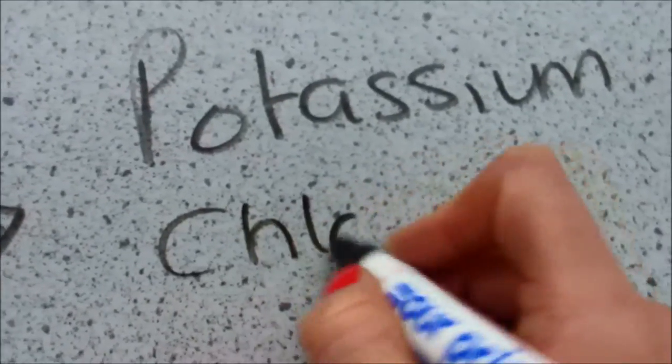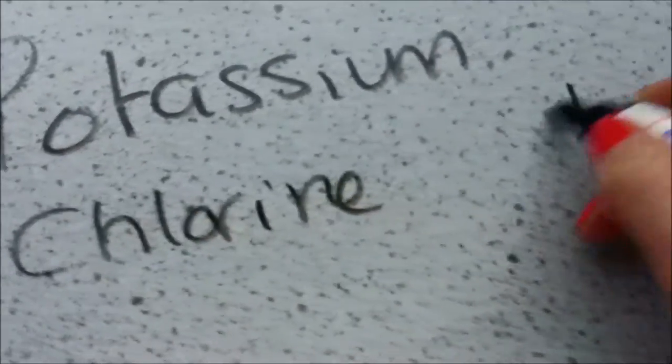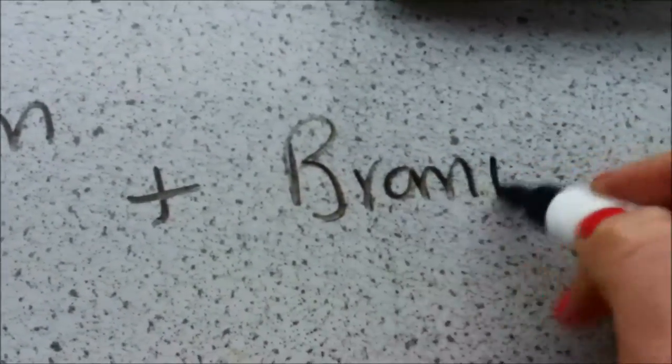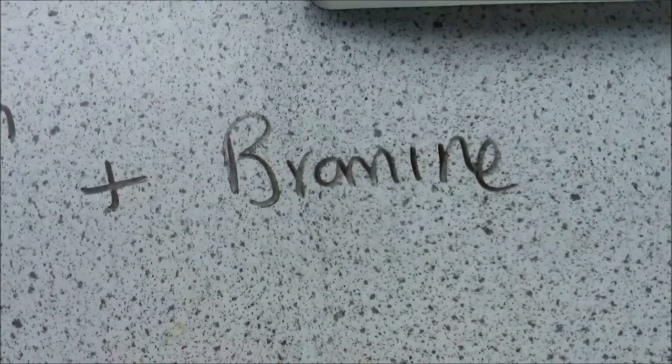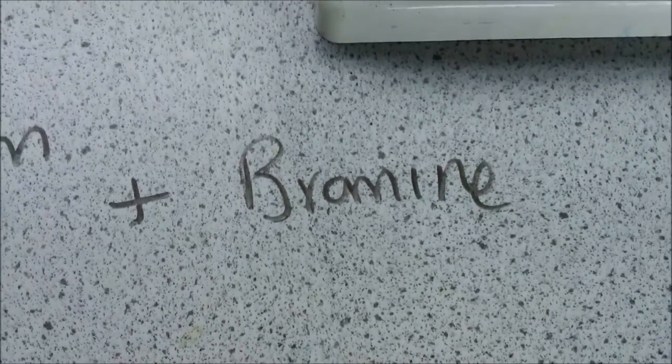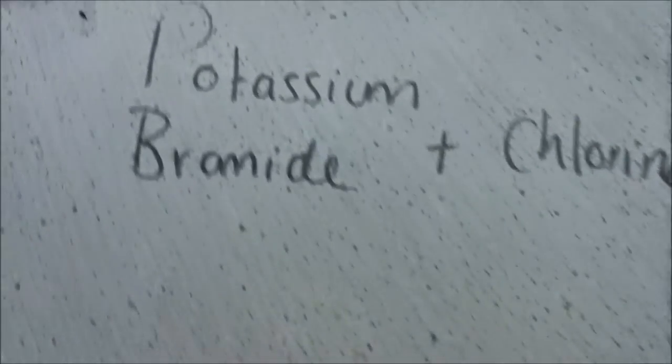What would we be left with at the other side? So, we would still have our potassium. But instead of being attached to the bromine, it would now be attached to the chlorine. Leaving bromine all by itself. Just like Miss Jennifer Aniston. This is displacement.